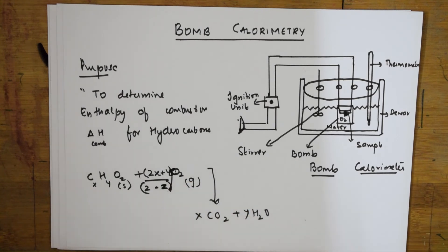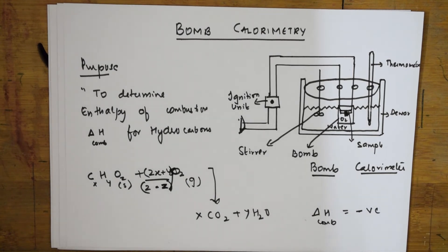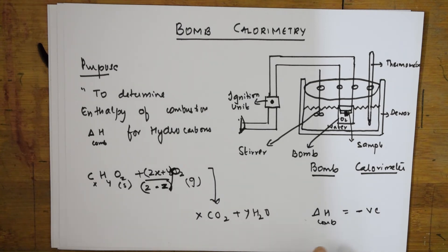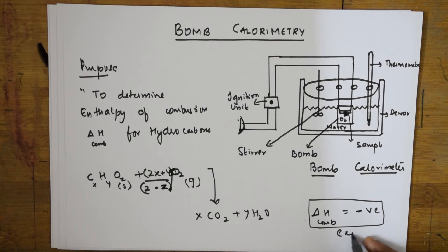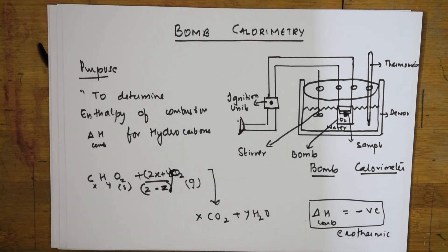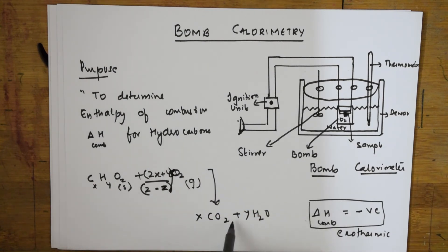Combustion reactions are always exothermic — they are going to give out a lot of heat. For such combustion reactions, ΔH_combustion is always negative because it is an exothermic reaction; a lot of energy is released out. In earlier literature, heat of combustion was written as positive delta H, but now we are clear: negative means the reaction is exothermic in nature. If your teacher asks the purpose of the bomb calorimeter, you can say it is used to determine combustion of hydrocarbons.